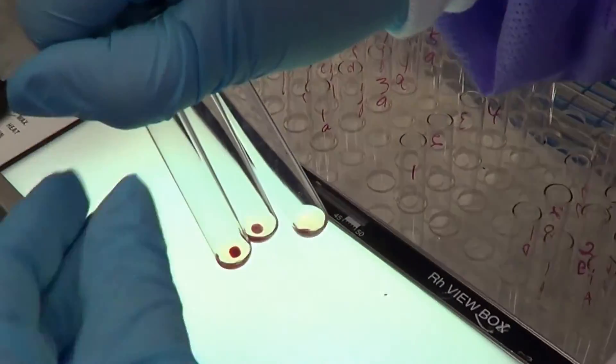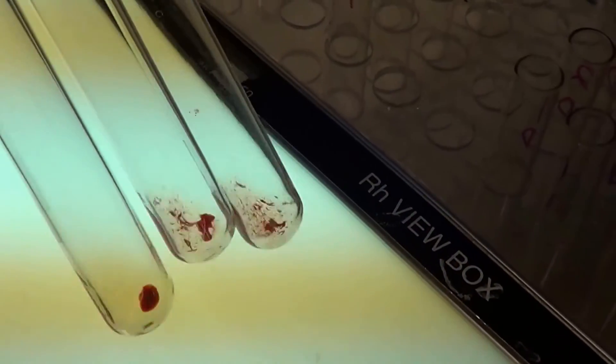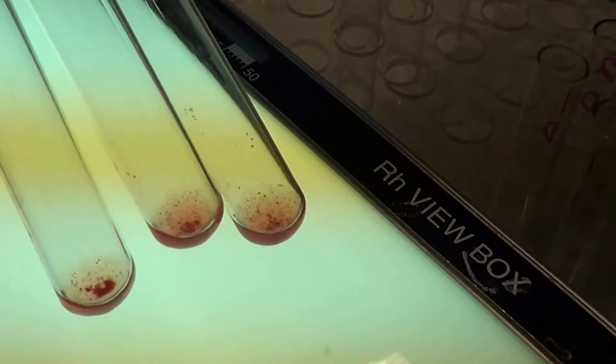You again shake them and check for agglutination. This time you want to have a positive agglutination. This means that your negative anti-human globulin test was valid.